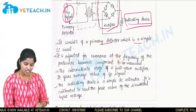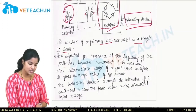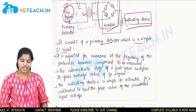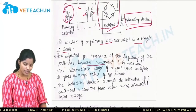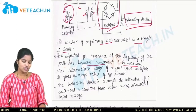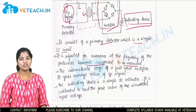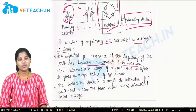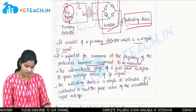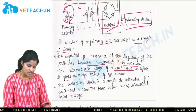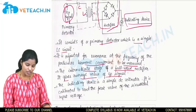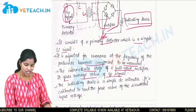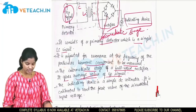It consists of a primary detector which is a simple LC circuit — this is C and this is L. It is adjusted to resonance at the frequency of a particular harmonic component to be measured. The intermediate stage is a full wave rectifier which gives the average value of the input signal.